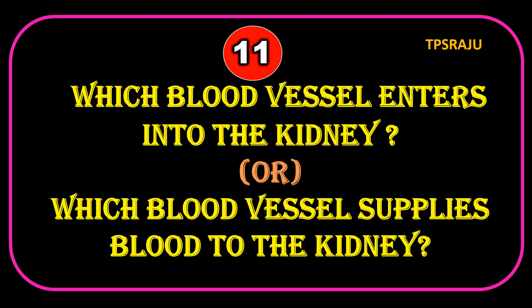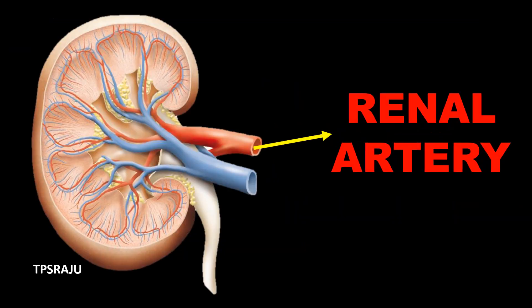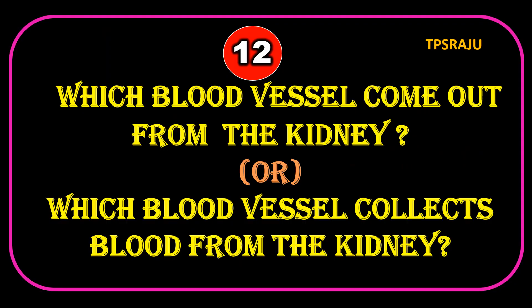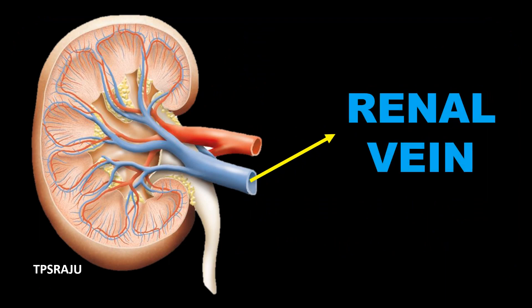Which blood vessel enters into the kidney, or which blood vessel supplies blood to the kidney? Renal artery. Which blood vessel comes out from the kidney, or which blood vessel collects blood from the kidney? Renal vein.